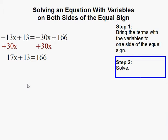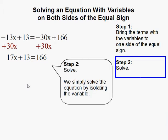The next step is to solve the equation by isolating x. We've got to get rid of 13, so we're going to subtract 13 on both sides of the equal sign.